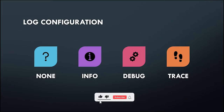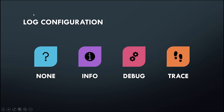Hello everyone, welcome to the new video on Cloud Platform Integration. The ultimate aim of this video is to tell you about how log configuration works in CPI. We will create another integration flow using a mail adapter, which you can use to get logs of errors or any notifications through the mail server. After creating the integration flow, we will see how to check logs based on levels like none, info, debug, and trace.